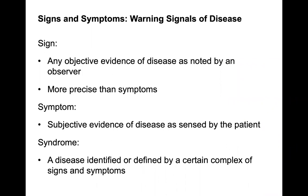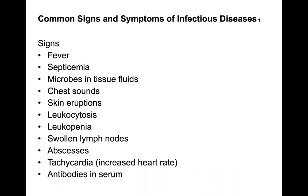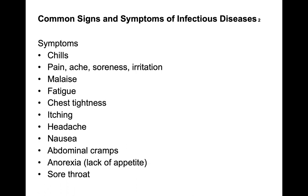When looking at infections, we examine signs and symptoms. A sign is any objective evidence of disease as noted by an observer — more precise than symptoms. A symptom is subjective evidence of disease as sensed by the patient. A syndrome is a disease identified by a certain complex of signs and symptoms. Common signs include fever, septicemia, microbes in tissue fluids, cloudiness of tissue fluids, chest sounds, and skin eruptions. Symptoms include chills, pain, ache, soreness, irritation, malaise, fatigue, chest tightness, headache, nausea, and sore throat.